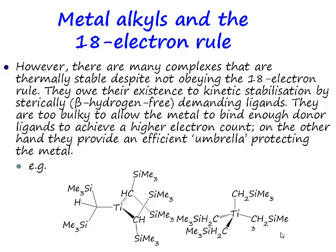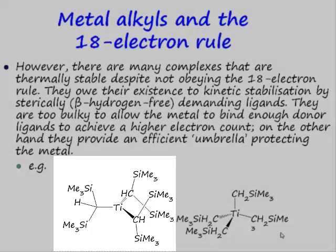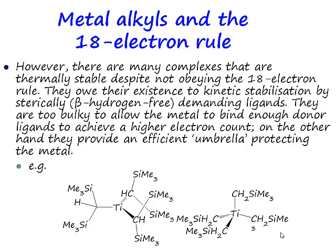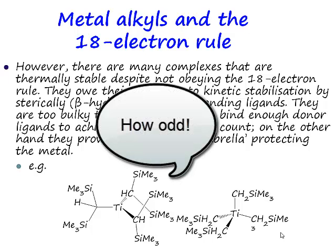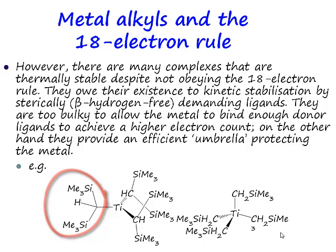Now if we want to produce something even more electron-deficient, then we need to use an even more sterically encumbered alkyl ligand — and this one will require some innovation on your part. What's the electron count of the complex on the left? This is a seven-electron complex. That should be screaming at you — seven electrons: not only is it spectacularly electron-deficient, it's got an odd number of electrons. This species has no right to be stable, and yet it is isolable, because we've got these whacking great bis-trimethylsilylmethyl ligands producing a steric umbrella and stabilising the complex.